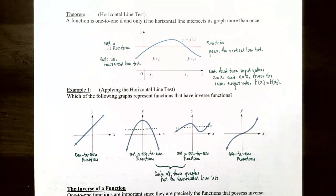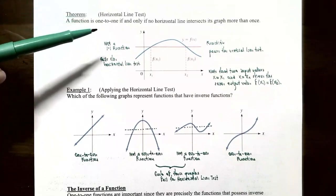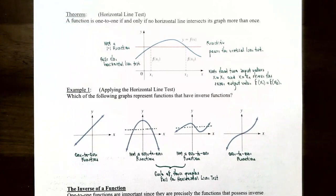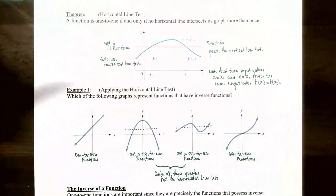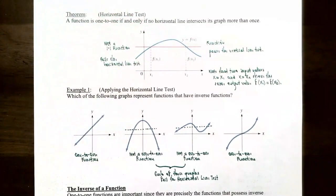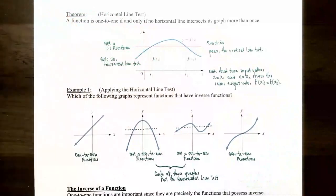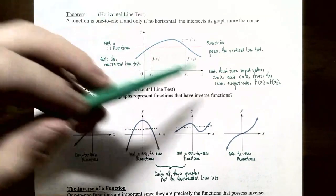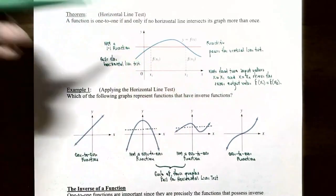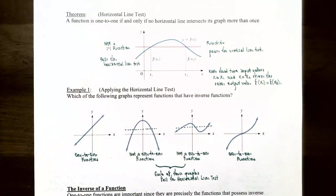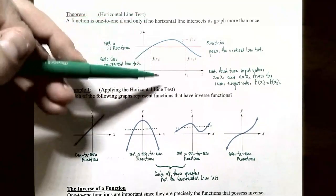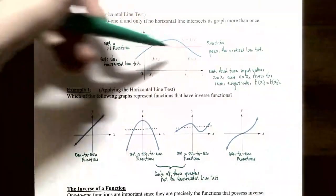Earlier we talked about the vertical line test, which is used to determine if a graph represents a function — choose one x value and see if you have more than one y value. The horizontal line test says: a function is one-to-one if and only if you can draw a horizontal line that does not intersect the graph more than once. If a horizontal line hits the graph at x₁ and x₂ — two different x values with the same y value — then it fails the horizontal line test and is not one-to-one. Note that the graph can still pass the vertical line test, meaning it's a function, just not a one-to-one function.